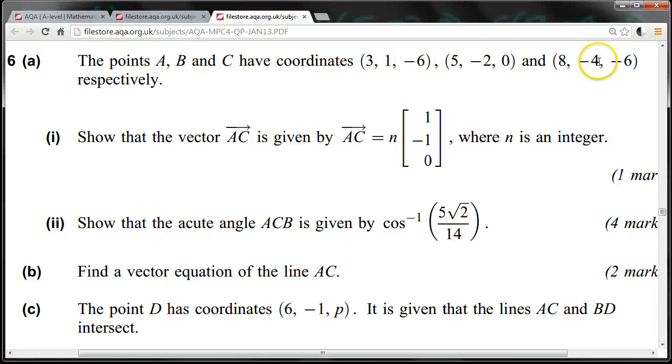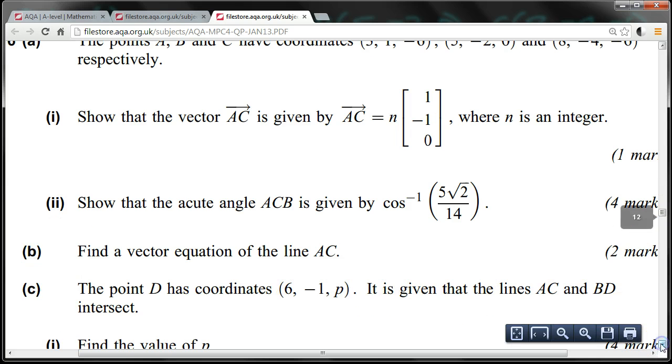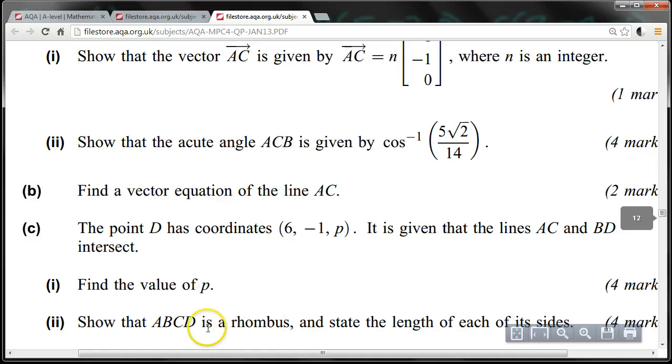The points A, B, C have these coordinates. Show that the vector AC is given by this. Show that the acute angle ACB is given by this. Find the vector equation of the line AC. And the point D has these coordinates. It is given that AC and BD intersect. Find the value of P and show that ABCD is a rhombus and state the length of each of its sides.